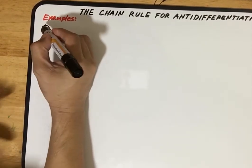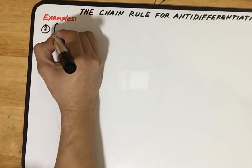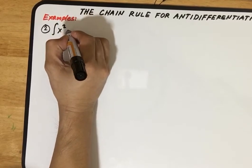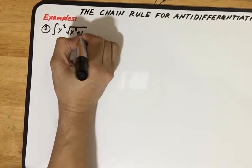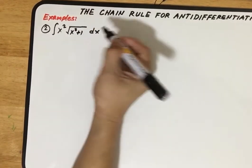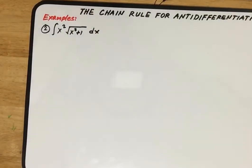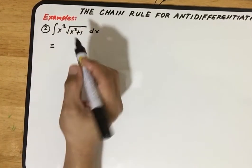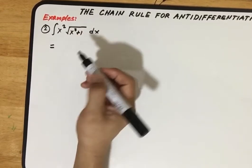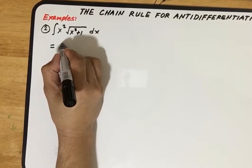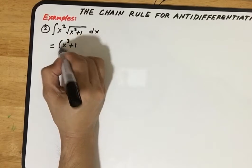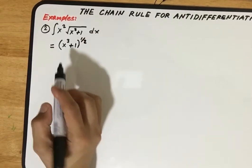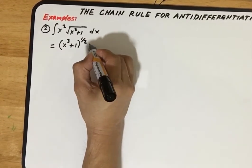Example number two: we're given the integral of x squared multiplied by the square root of x cube plus one times dx. Like we did in our first example, we can rewrite this in terms of rational exponent. We have x cube plus one raised to power one-half times x squared dx.